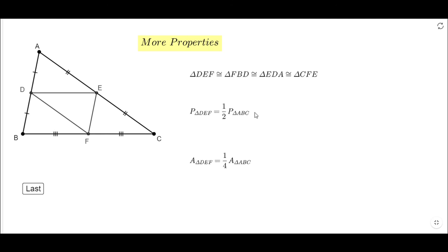And in fact, the ratio of similarity between any of the small triangles and the big triangle is one-half. The small triangle is a reduction of the big triangle by a scale factor of one-half.